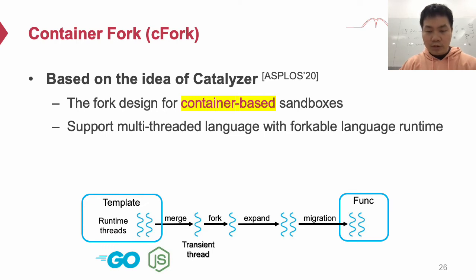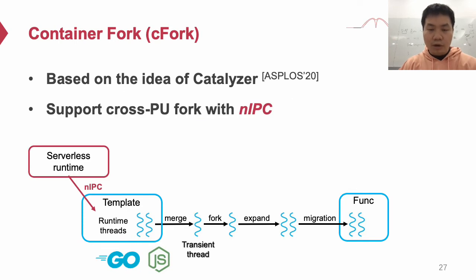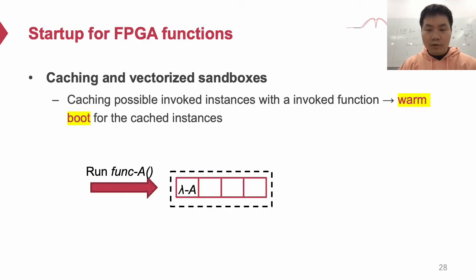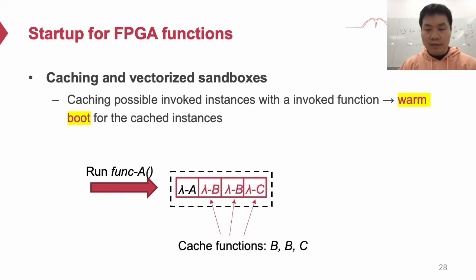We still need to migrate the forked processes to a new container called function container to hold the cgroup-based resource isolation requirement. Moreover, SafeFork is capable of supporting heterogeneous computers. It utilizes neighbor IPC to issue the fork command to templates on different PUs. Therefore, it is capable of forking instances on remote PUs. Molecule also optimizes the startup latency for FPGA-based functions. The main idea is to utilize vectorized sandbox to cache possible invoked instances in a single FPGA image. Therefore, when a request for the cached instance arrives, the cached instance can handle the request directly without a cold boot.